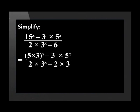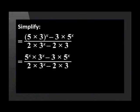Let's start by changing 15 in the numerator and 6 in the denominator to products of their prime factors. 15 is 5 times 3, and 6 is 2 times 3. By raising 5 times 3 to the power of x, you will get 5 to the x times 3 to the x.